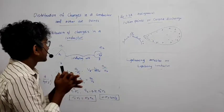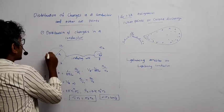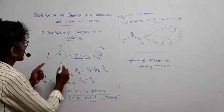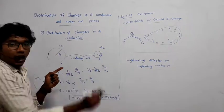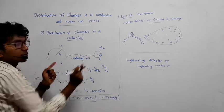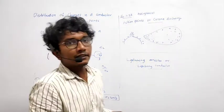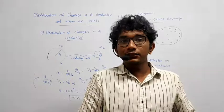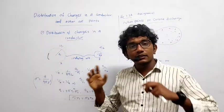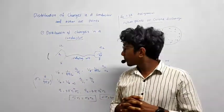We are taking two spherical conductors — one is A and the other is B — with radii R1 and R2. Their charges are Q1 on A and Q2 on B, and they are connected by a conducting wire. One thing to note: the distance between the two conductors is much, much bigger than their radii.